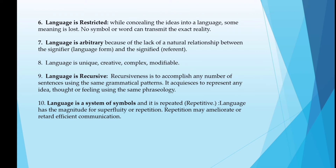Language is restricted — while converting ideas into language, some meaning is lost, and no symbol or word can transmit the exact reality. Language is arbitrary because of the lack of a natural relationship between the signifier (the language form) and the signified referent. Language is unique, creative, complex and modifiable. Language is also recursive — recursiveness is the ability to produce any number of sentences using the same grammatical pattern, to represent any idea, thought or feeling using the same phraseology. Language is a system of symbols and it is repetitive; repetition may improve or hinder efficient communication.